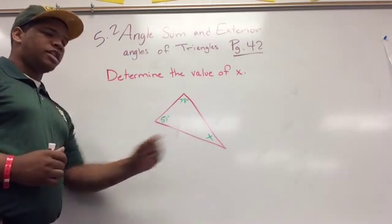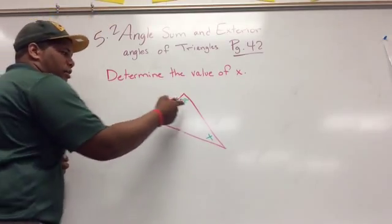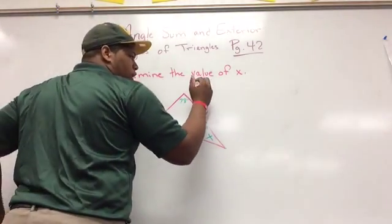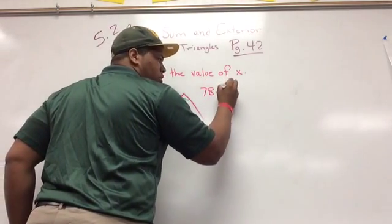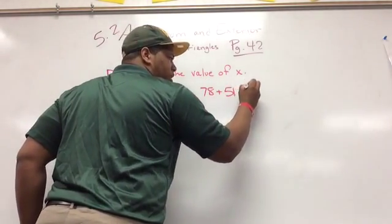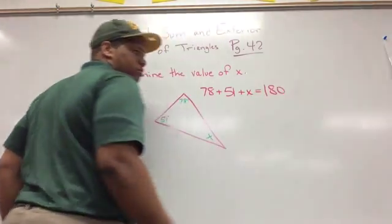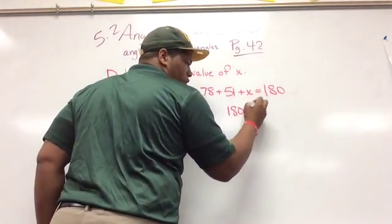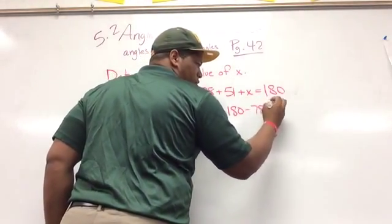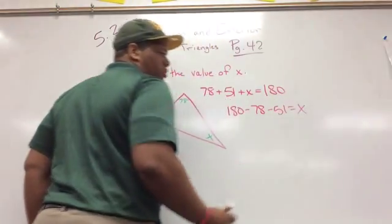I know that because of what we just went over, 78 plus 51 plus x should equal 180. So another way to put this is 180 minus 78 minus 51 will give me my x.